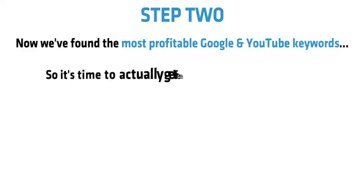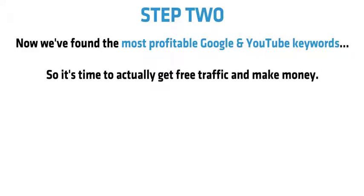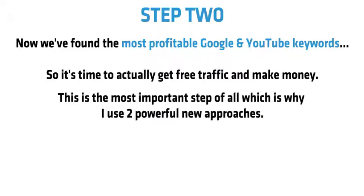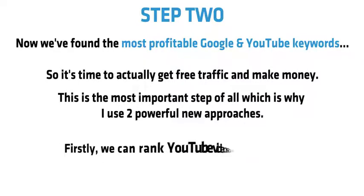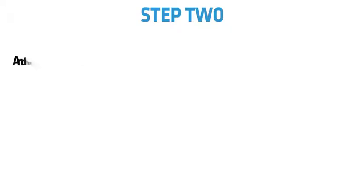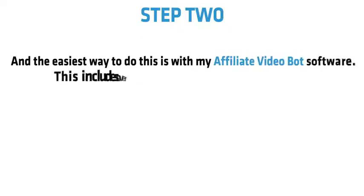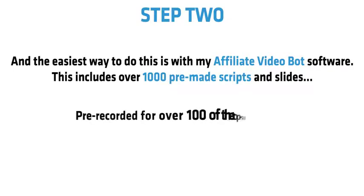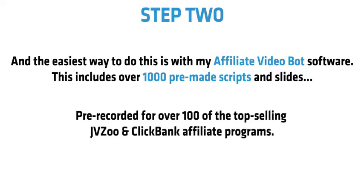Step 2: Now we've found the most profitable Google and YouTube keywords, so it's time to actually get free traffic and make money. This is the most important step of all, which is why I use two powerful new approaches. Firstly, we rank YouTube videos on Google without even needing a website, and the easiest way to do this is with my Affiliate VideoBot software. This includes over 1,000 pre-made scripts and slides, pre-recorded for over 100 of the top-selling JVZoo and ClickBank affiliate programs.